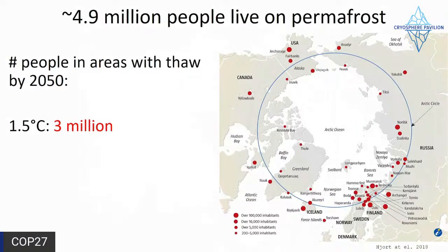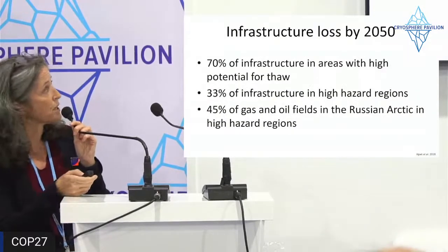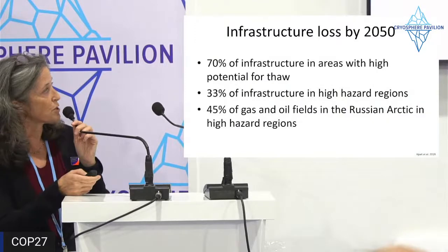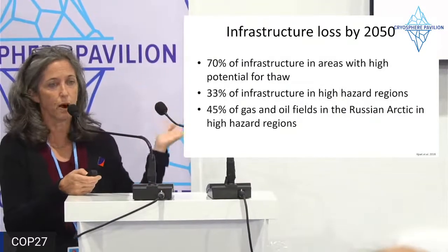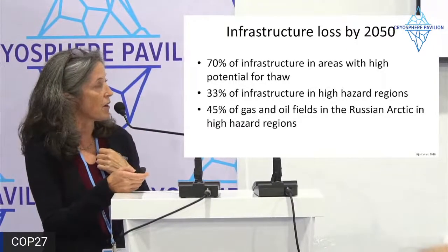By 2050, at 1.5°C about 3 million people will be impacted by permafrost thaw; at 2°C, 3.6 million — with 9–33% of people in high-hazard areas. There are significant infrastructure impacts: 70% of infrastructure in the northern region is in areas with high potential for thaw, and 30% is in high-hazard areas — meaning areas with high potential for abrupt ground collapse. 45% of gas and oil fields in the Russian Arctic are in high-hazard areas.